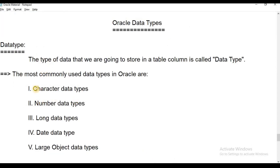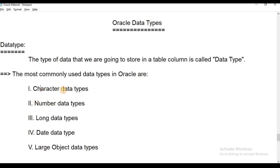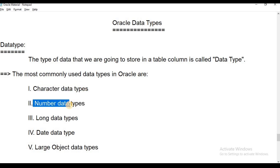So what are the main data types? One is Character data type, which is used for storing alphanumeric data — it supports both alphabets and digits, and has further subtypes. Another is Number data type, which is used for storing numerical values, either fixed or floating point values.